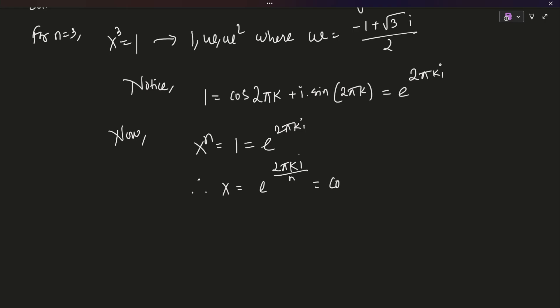It basically becomes x equals to e to the power 2 pi k i by n, which is nothing but cos of 2 pi k by n plus i into sin of 2 pi k by n. And, k runs from 0, 1 and all the way up to n minus 1. These are called the nth roots of unity.